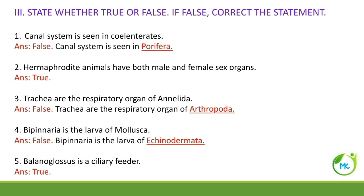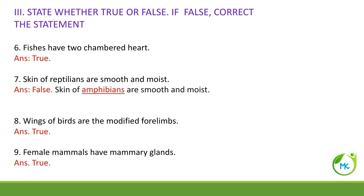Bipinaria is the larva of Mollusca — the answer is false, because bipinaria is the larva of Echinodermata. Balanoglossus is a ciliary feeder — it is true. Fishes have a two-chambered heart — it is true. The skin of reptilians is smooth and moist — no, the skin of amphibians is smooth and moist. The wings of birds are modified forelimbs — it is true, as the forelimbs are modified into wings in birds.